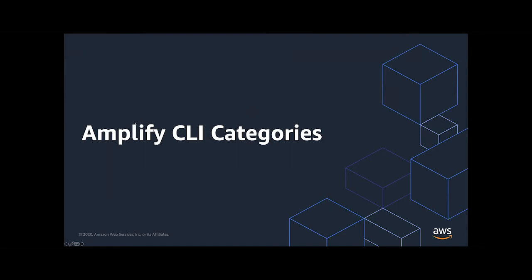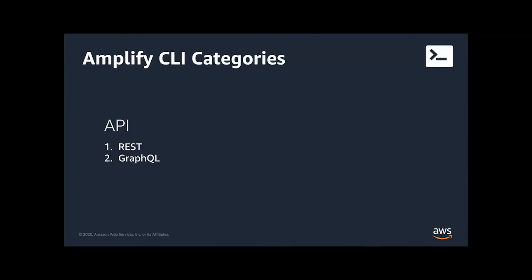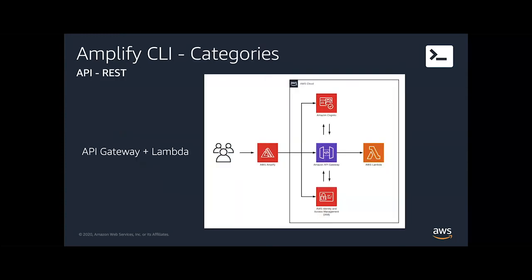Some of the categories currently supported — we're going to go through a couple. The API category allows you to create REST APIs and GraphQL APIs. We're going to be focusing on GraphQL. The REST API has the CLI create a combination of a Lambda function and an API endpoint using API Gateway. It also allows you the option to configure that with authentication.